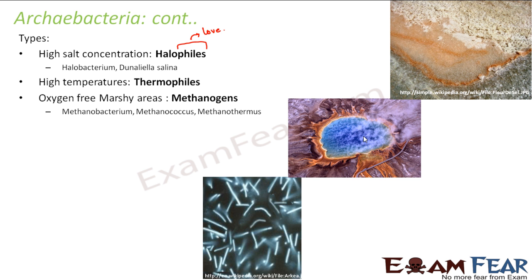The third type is those who live in oxygen-free marshy areas. Marshy areas are nothing but swamps or moist areas. They are known as methanogens. Examples include Methanobacterium, Methanococcus, and Methanothermus. Note that the word 'coccus' means something which is spherical in shape, so methanogens which are spherical in shape are called Methanococcus. That is how you can relate the structure of a bacterium by looking at its name.